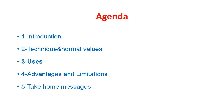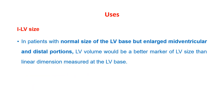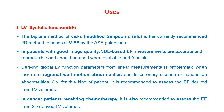Regarding the uses of left ventricular volumes: the first use is to assess LV size, especially in patients with a normal-sized LV base but enlarged midventricular and distal portions. In these patients, LV volume is a better marker of LV size than linear dimension measured at the LV base, as the linear dimension will underestimate LV size. The second use is to assess ejection fraction — the biplane Simpson method is the recommended 2D method by the American Society of Echocardiography guidelines.